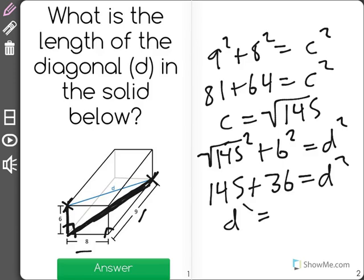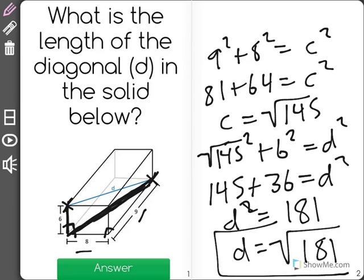So d squared equals 181, which means that d is equal to the square root of 181 for the correct answer.